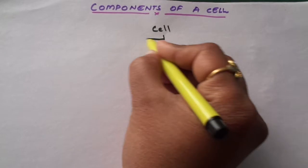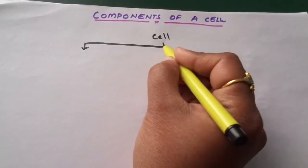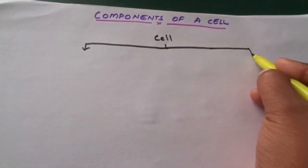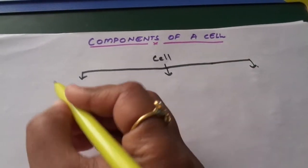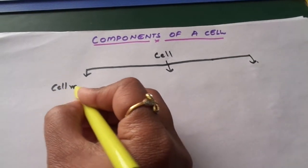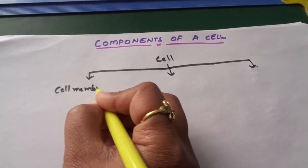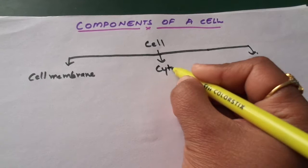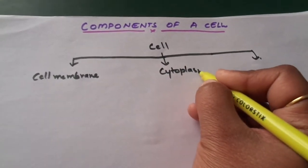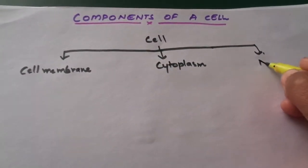In a cell, first we will divide the cell into three components. The first one is cell membrane, then another is cytoplasm, and the third is nucleus.